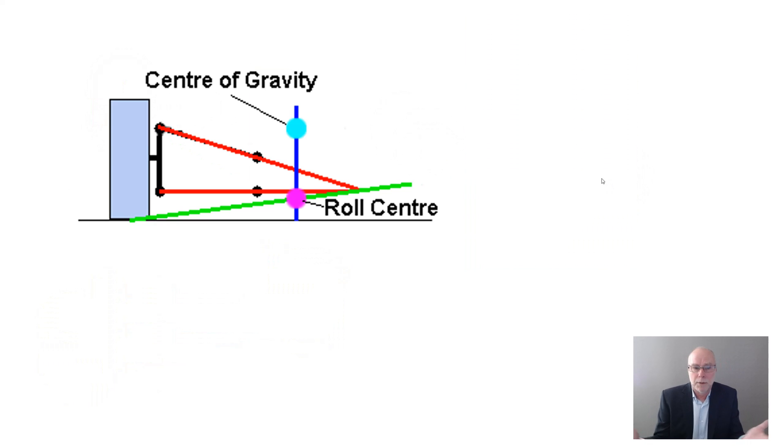So what about other impacts of the roll centre? Well, the roll centre will determine how much a given car rolls in cornering, because the higher the centre of gravity of the car is above the roll centre, the greater the body roll if everything else remains the same. So the lower the roll centre, if the centre of gravity doesn't change, the more the car will roll.